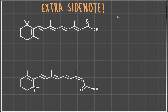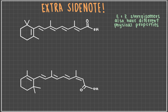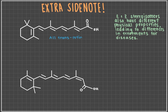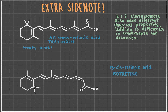E and Z stereoisomers also have different physical properties, which can lead to some surprising and drastic differences in the conditions they can treat. All-trans-retinoic acid, otherwise known as tretinoin, is used to treat acne, while cis-retinoic acid, known as isotretinoin, has been documented as a strong cancer therapeutic as well as a treatment for acne. That's remarkable!